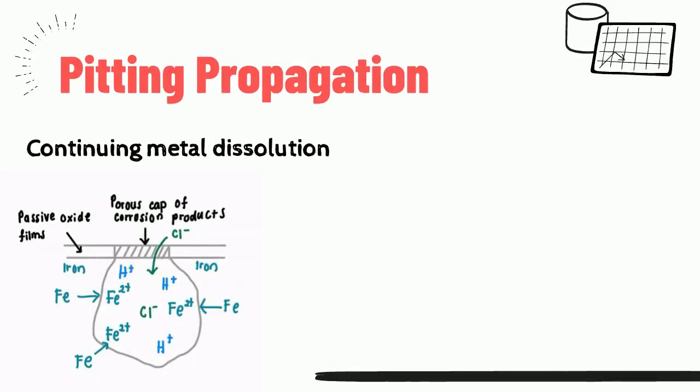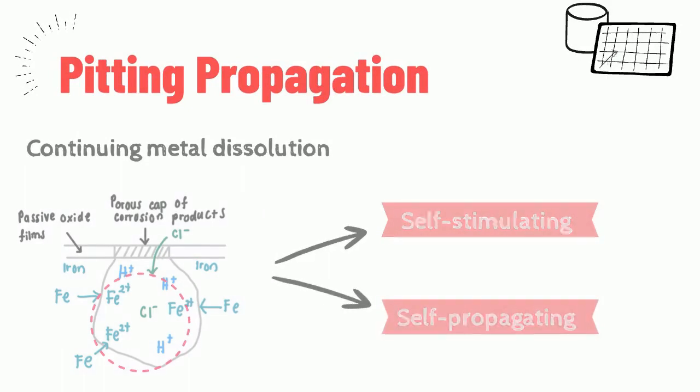Pitting propagation is due to the continuing metal dissolution which leads to an excess of positive metal ions that accumulated in the anodic area. The process is self-stimulating and self-propagating.